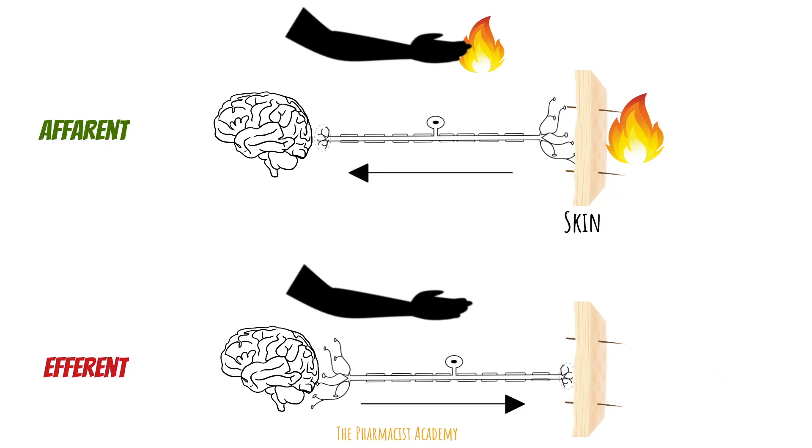To remember what afferent does versus efferent, you need to have a reference. So in this case, the reference is the brain. The afferent will always arrive into the reference and the efferent will exit from the reference.